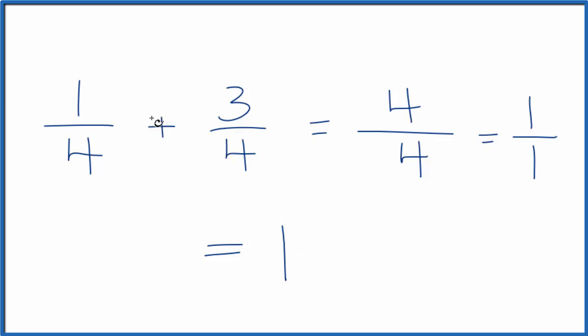If you wanted to think about this in terms of fractions, if you divide one by four, you get 0.25. And if you divide three by four, you get 0.75. And 0.25 plus 0.75, that gives us one.